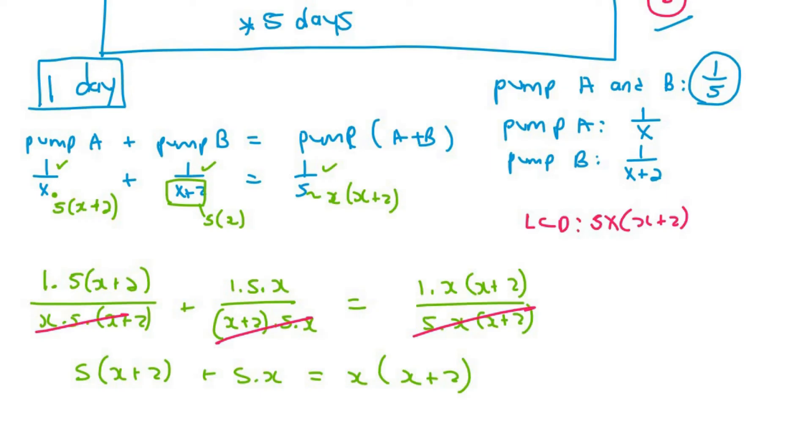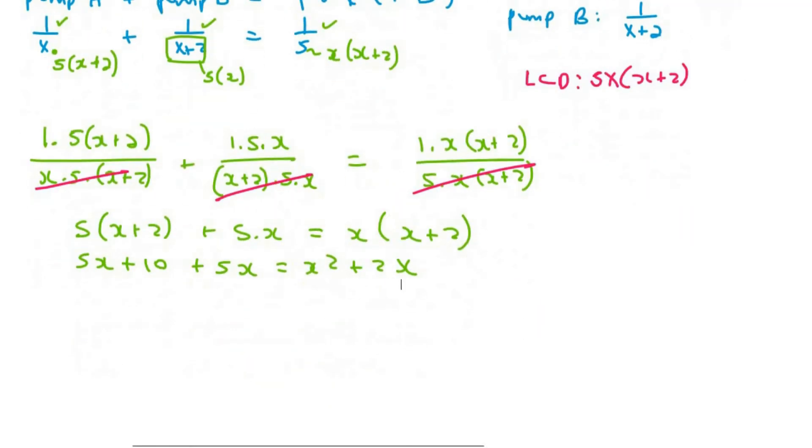And so we simply end up with five multiplied by X plus two plus five multiplied by X equals to X multiplied by X plus two. And so now we can multiply the five in. So it's going to be five X plus ten plus five X equals to X squared plus two X. And so it's going to give us X squared plus two X minus five X minus ten minus five X. So I'm going to make that equal to zero. And then we can solve for X. So it's going to be minus eight X minus ten.